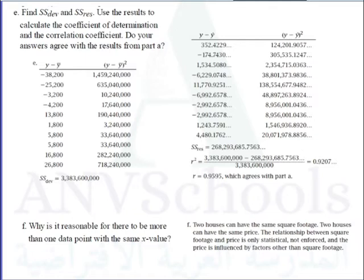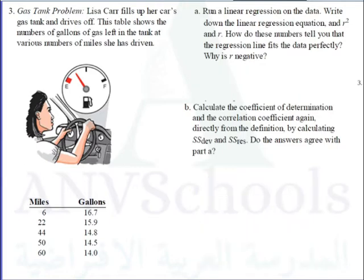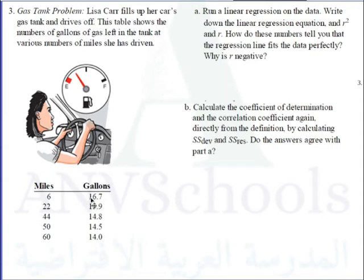So it's not only about area — two houses with the same lot area can have different prices. If you're going to buy a house in a subdivision, you would notice those discrepancies in prices. Now let's go to problem number three, the gas tank problem. Lisa fills up her car's gas tank and drives off. This table shows the number of gallons of gas left in the tank at various numbers of miles driven.